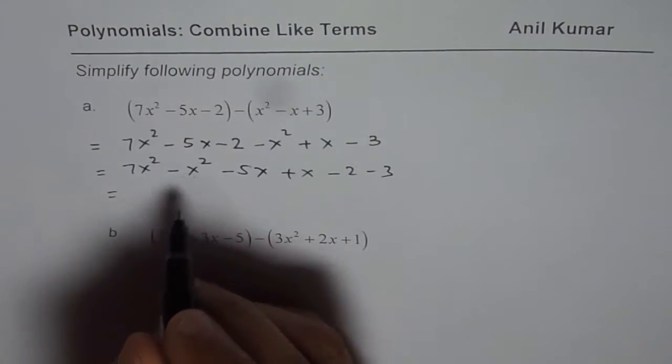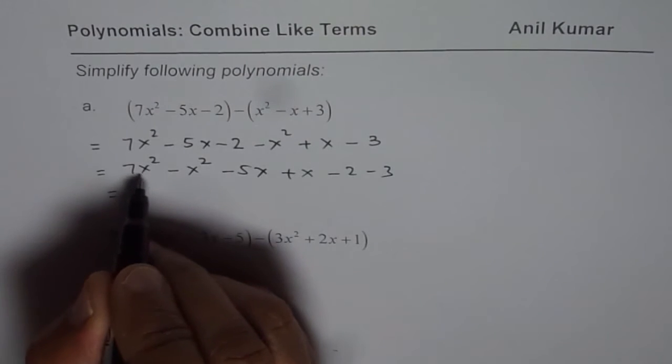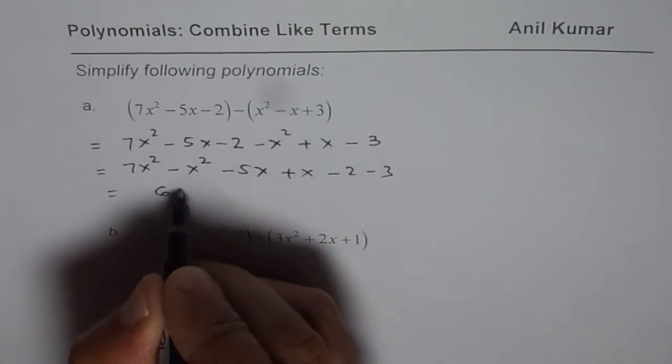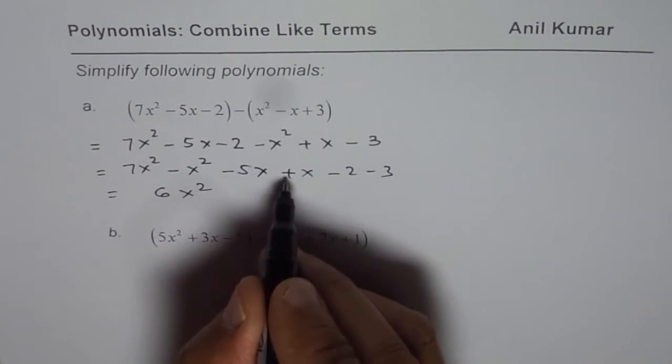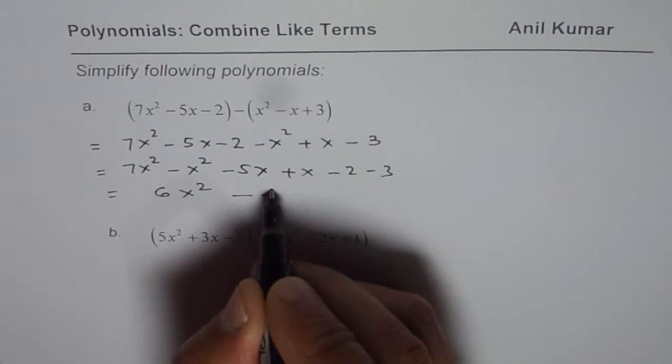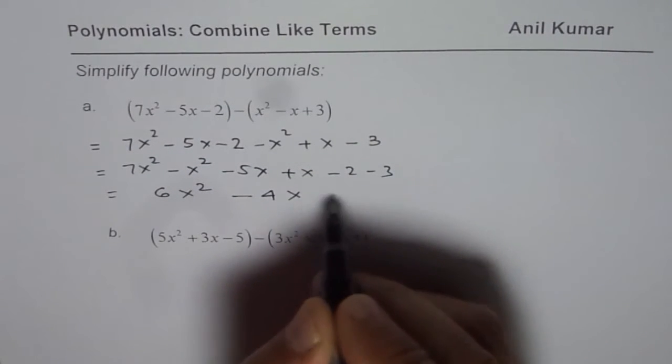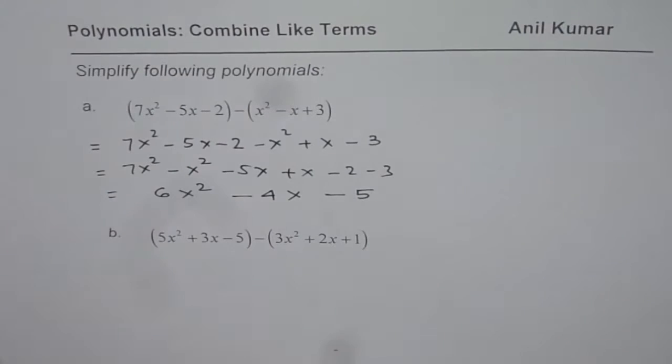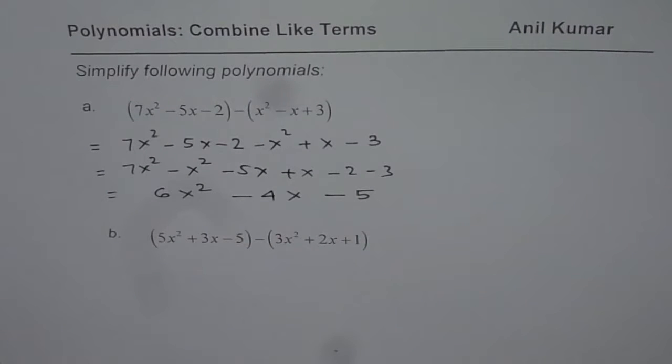Let's combine x squared terms. 7x squared minus x squared is 6x squared, minus 5x plus x is minus 4x, minus 2 minus 3 is minus 5. So finally we get a polynomial in which there are no like terms. That is the simplest form of polynomial.